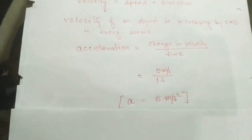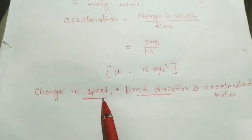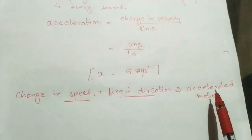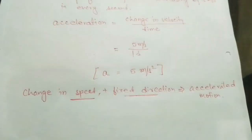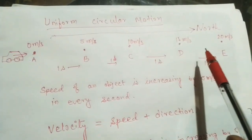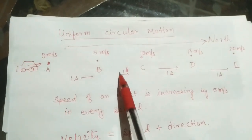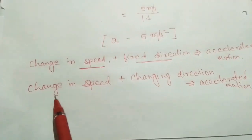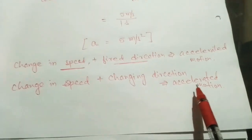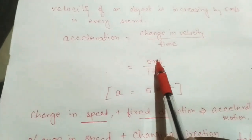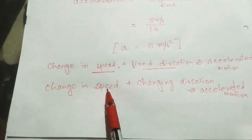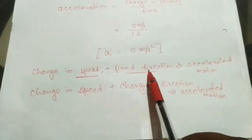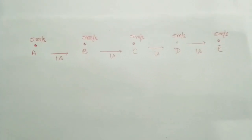We conclude that if there is a change in speed and the direction is fixed, there is accelerated motion — direction may be constant but if there is a change in speed there is accelerated motion. Now think: the car is increasing its speed and the direction is also changing — sometimes north, then south, then east, then west. In this case, change in speed plus change in direction still gives acceleration. Changing speed, whether direction is changing or not, will give accelerated motion.